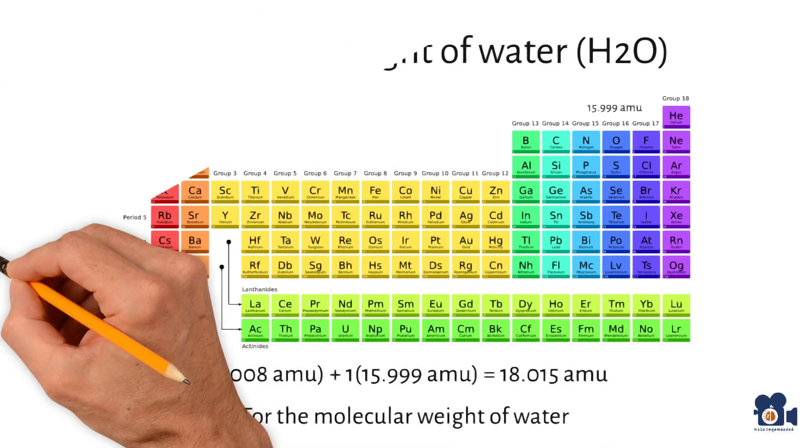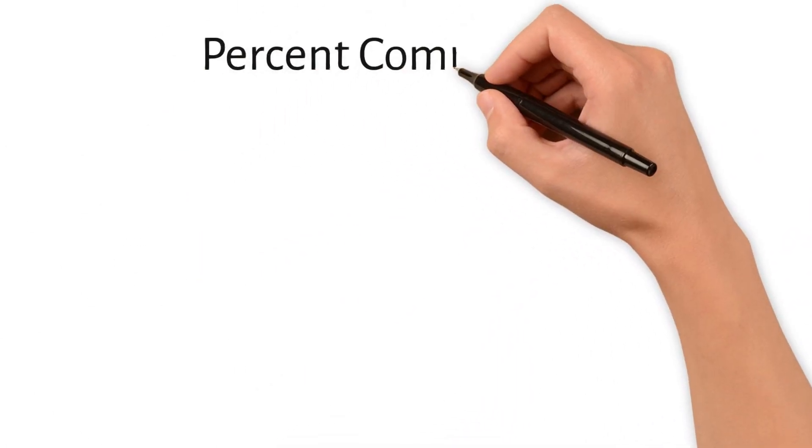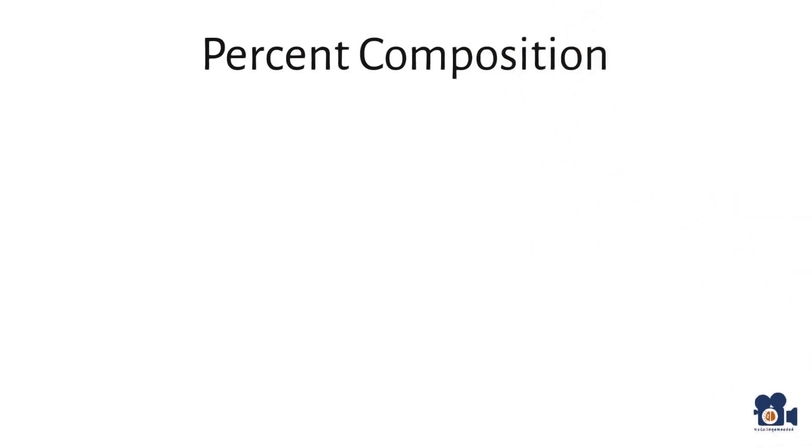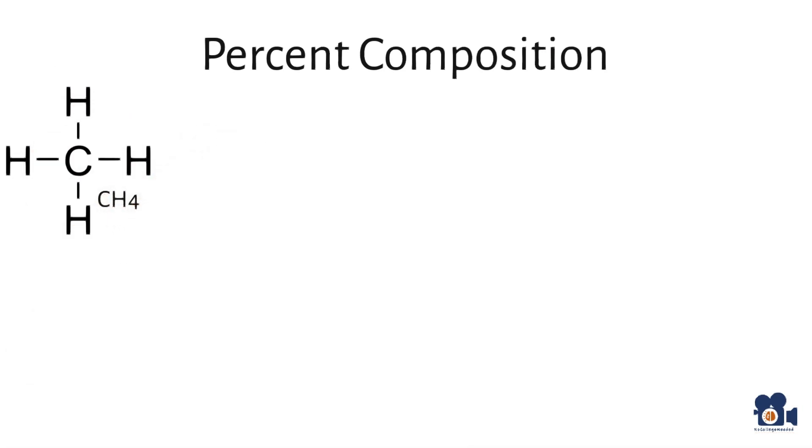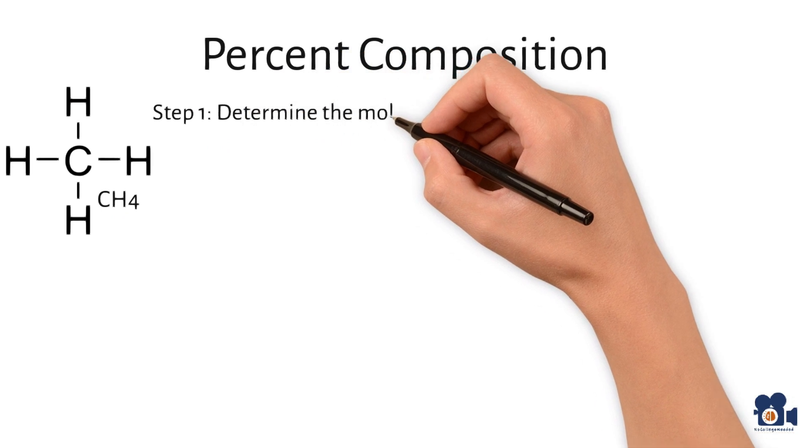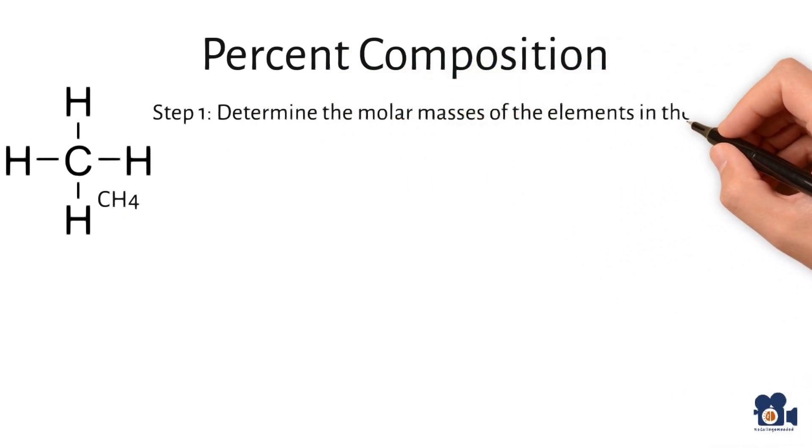One of the most common procedures that use chemical formulas is determining the percent composition of specific elements in a compound. For example, what is the percent composition of carbon and hydrogen in methane, CH4? The first step is to determine the molecular mass of the elements in the compound.